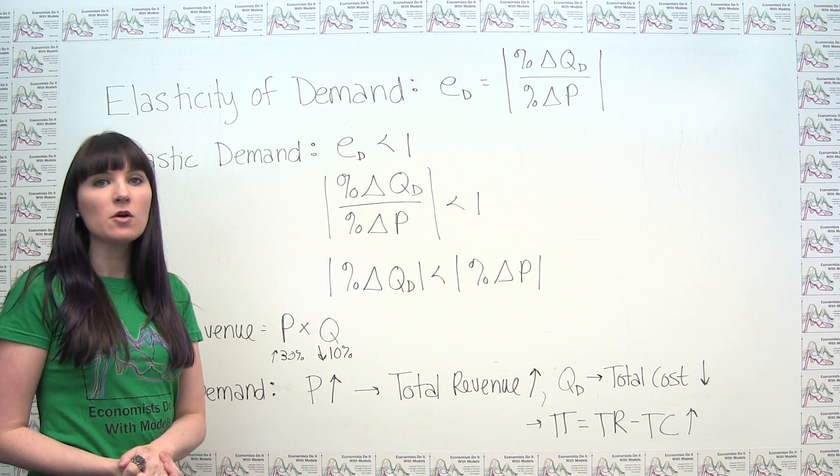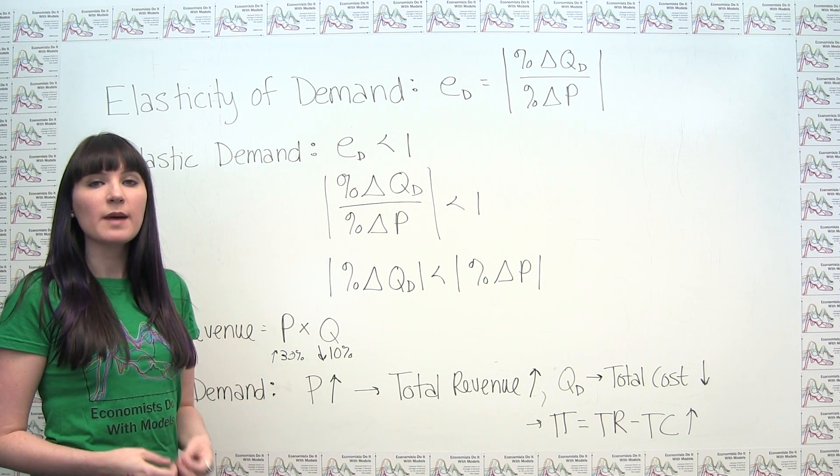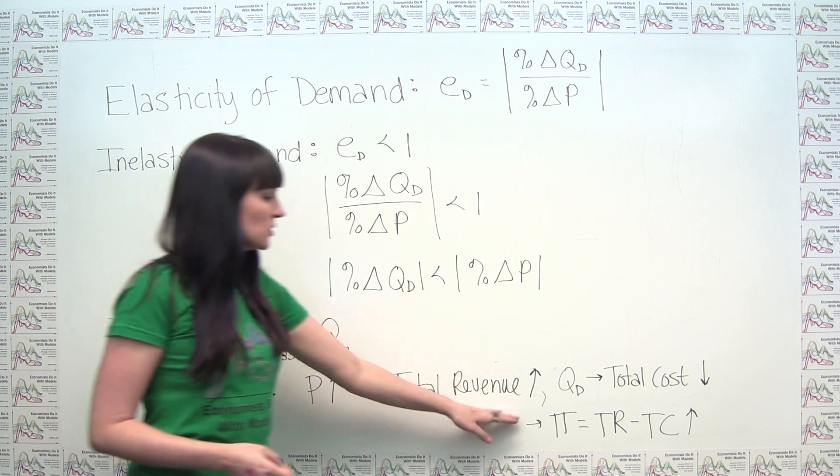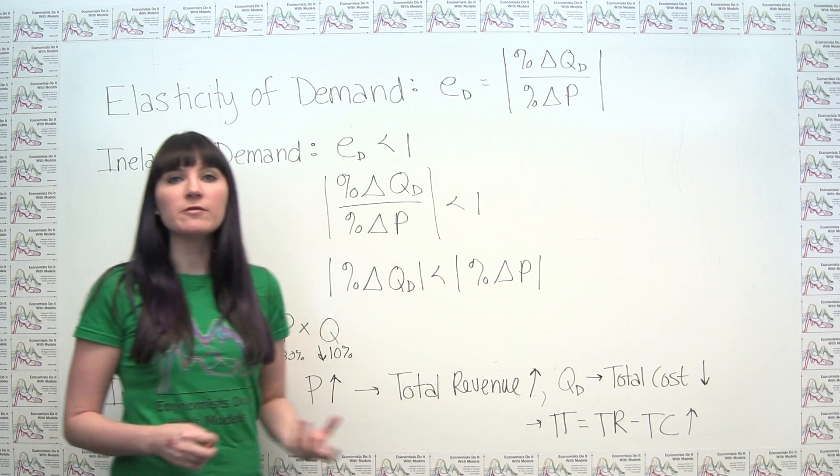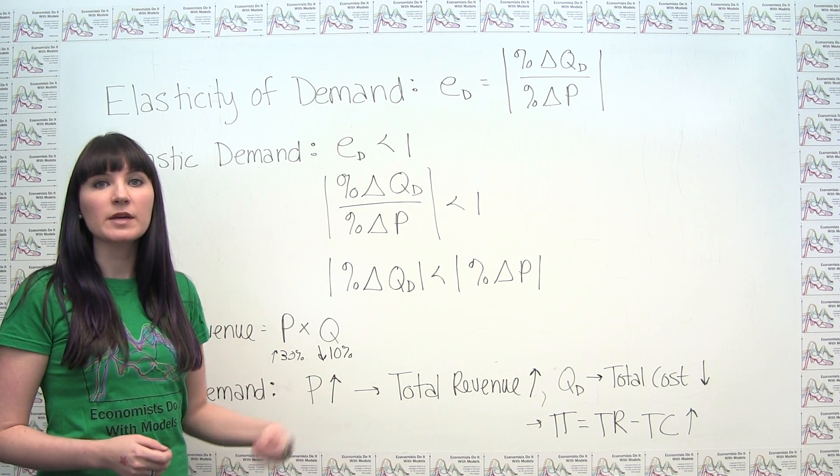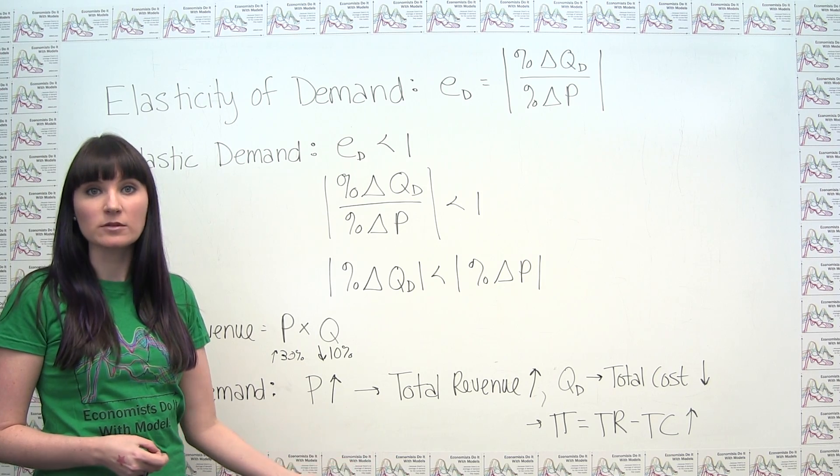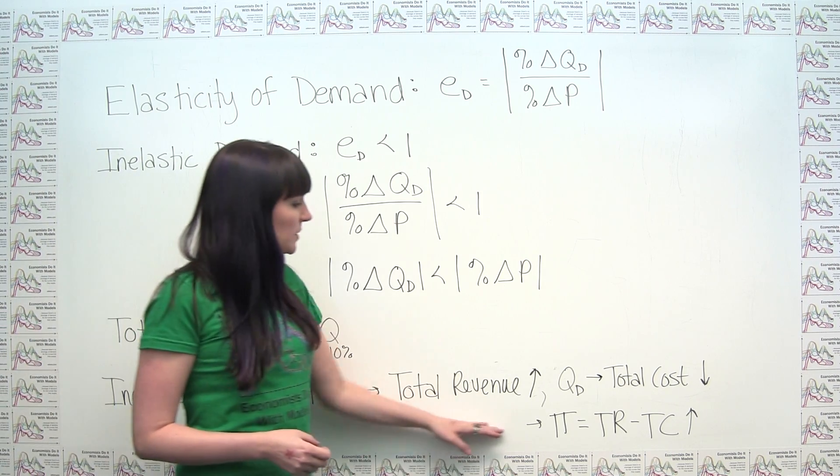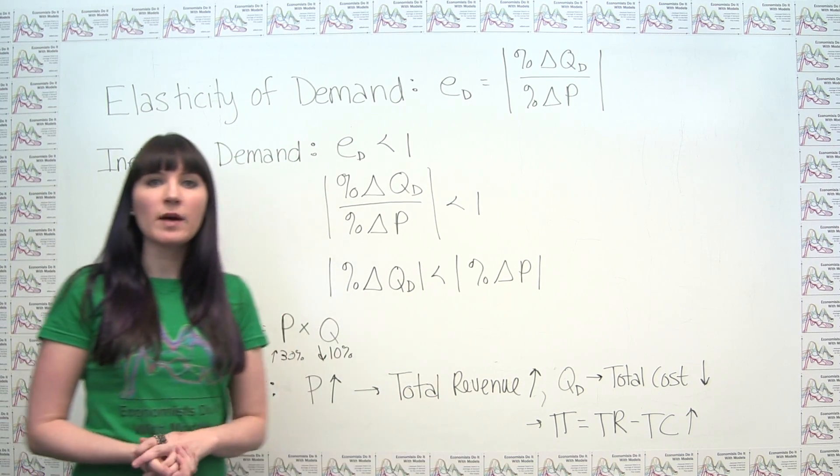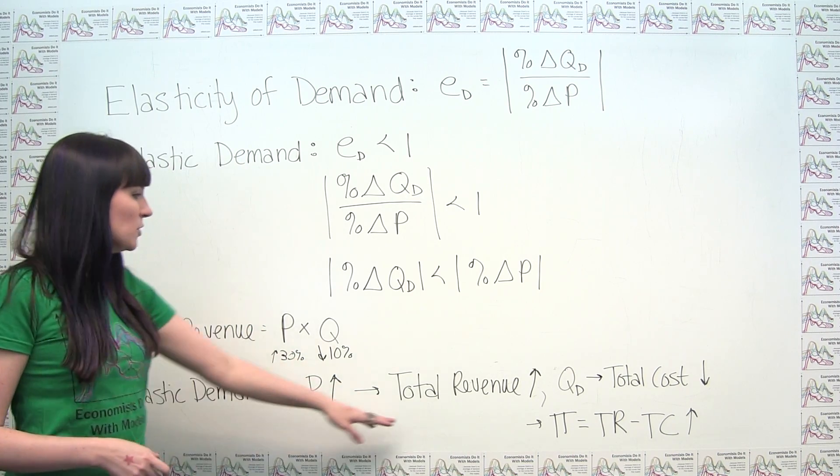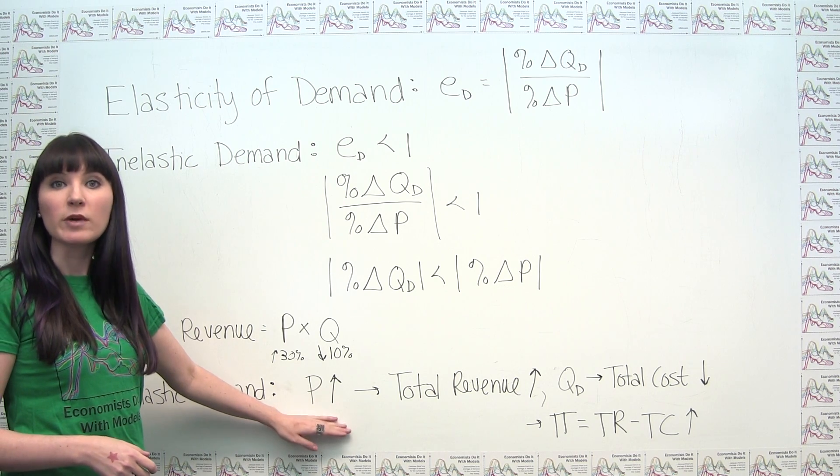Hopefully by now we know that the goal of a company is to maximize profit, which is often not the same as just maximizing total revenue, since total revenue is just the money that's coming in from selling a product and doesn't take the cost of production into account. But in this particular case, we can think about what the profit implications are for this chain of total revenue increase because of an increase in price.